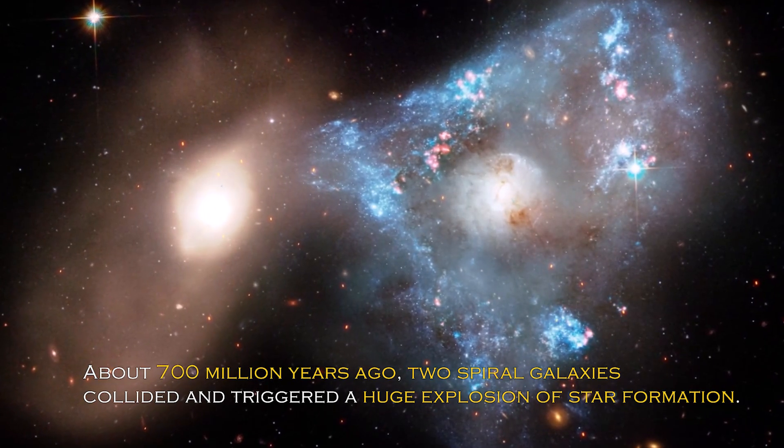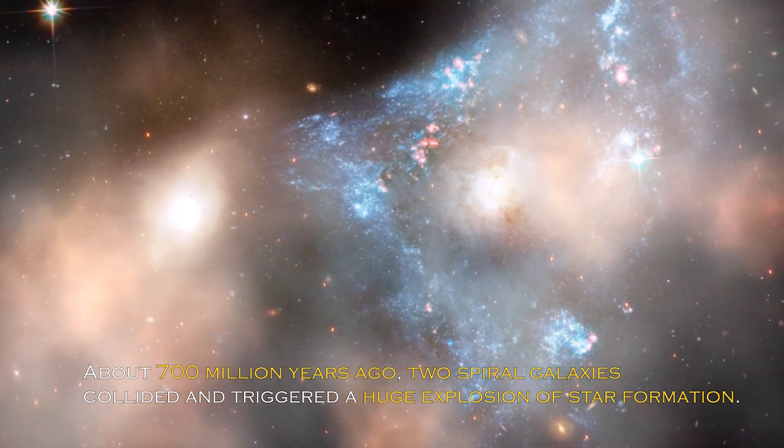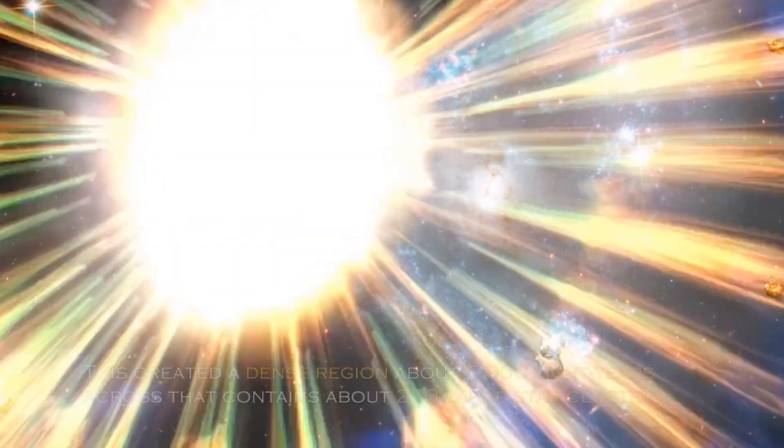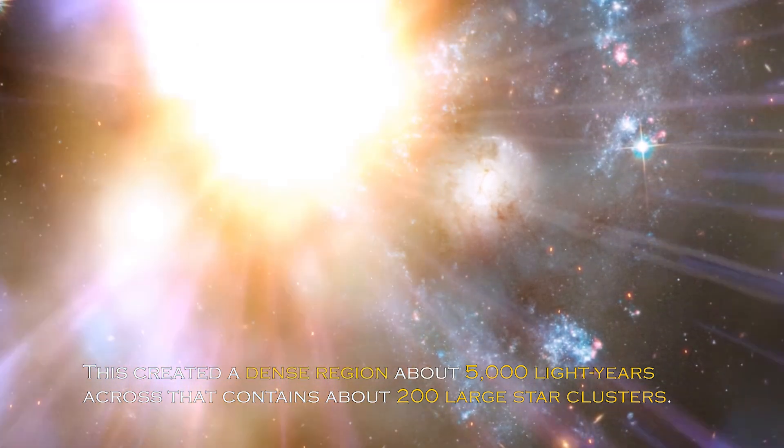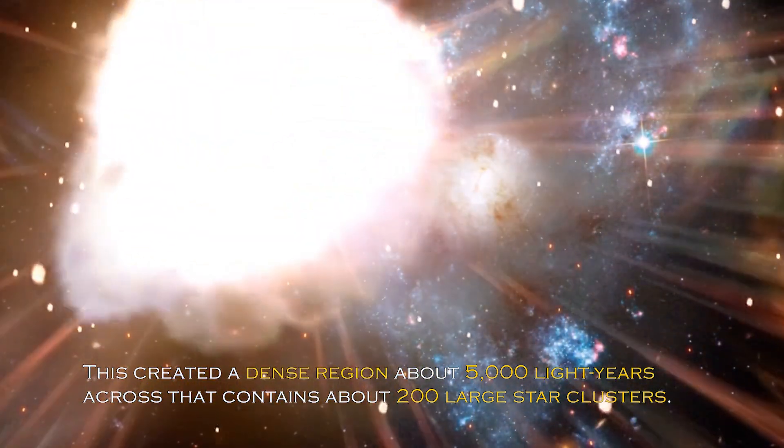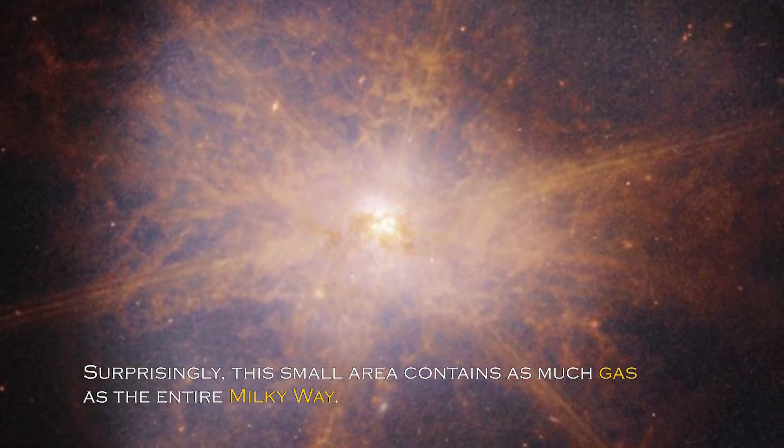About 700 million years ago, two spiral galaxies collided and triggered a huge explosion of star formation. This created a dense region about 5,000 light-years across that contains about 200 large star clusters. Surprisingly, this small area contains as much gas as the entire Milky Way.